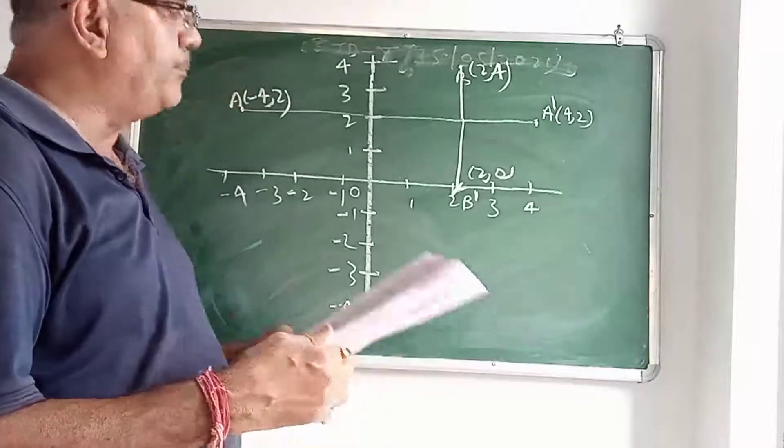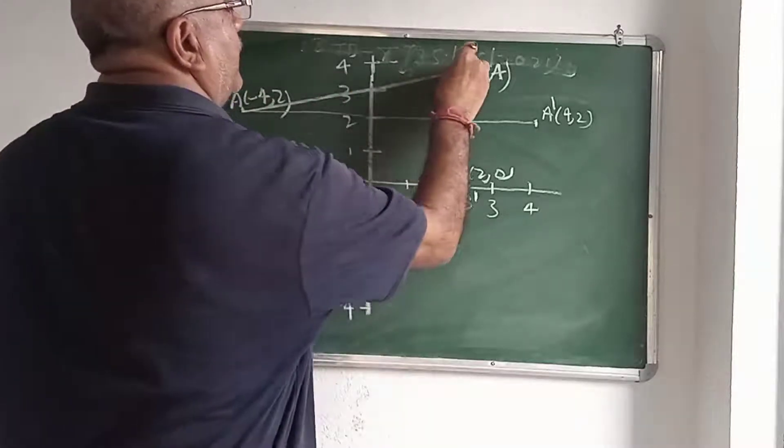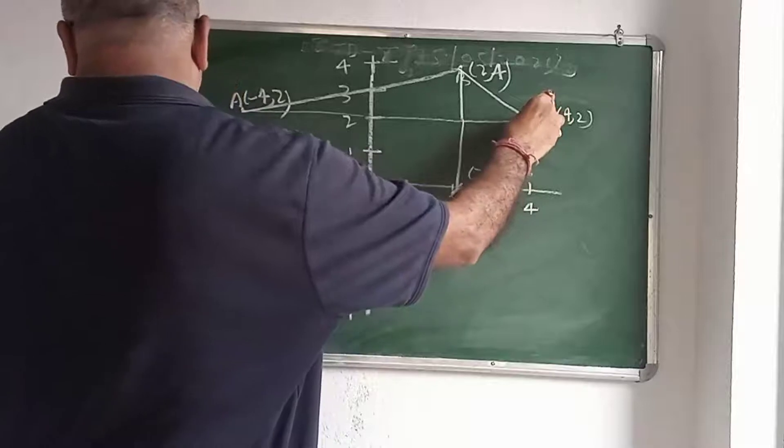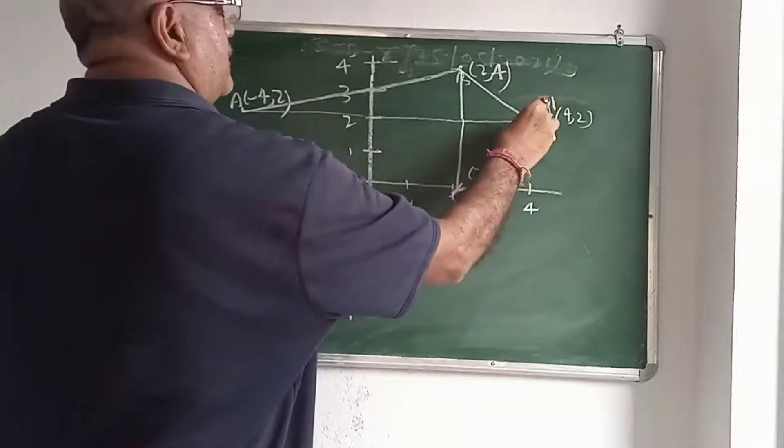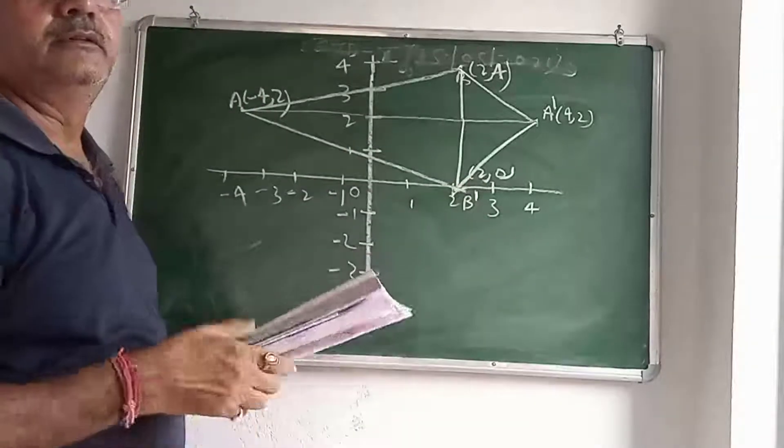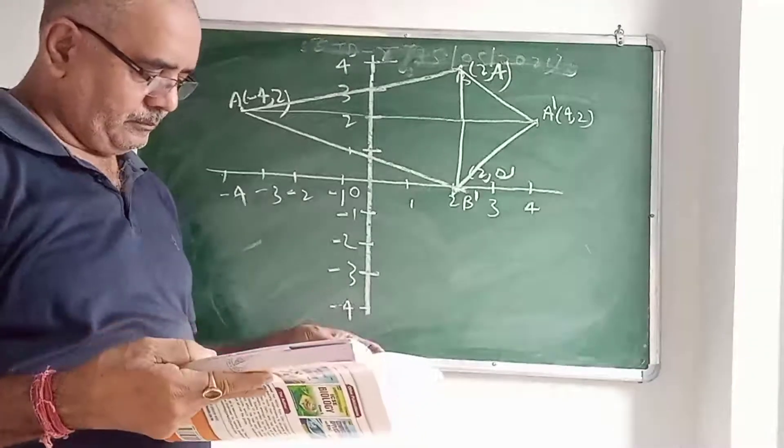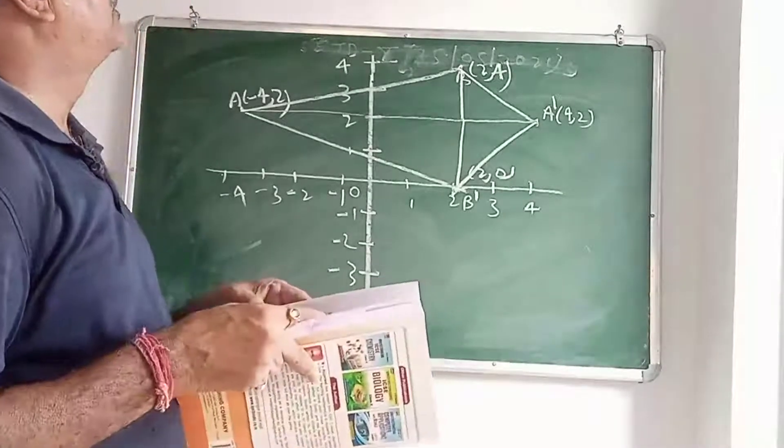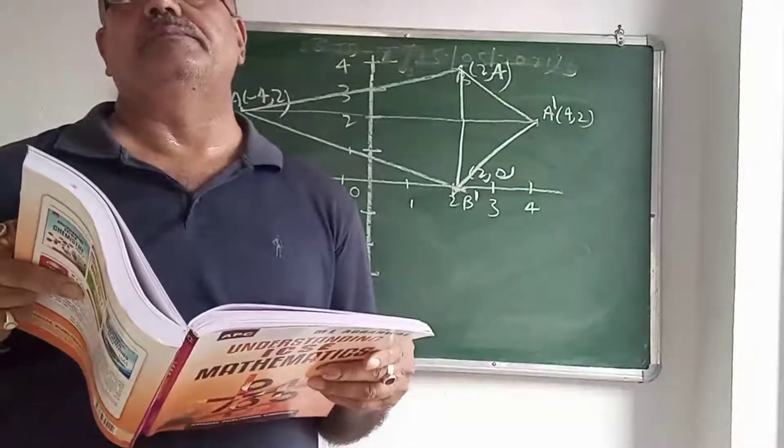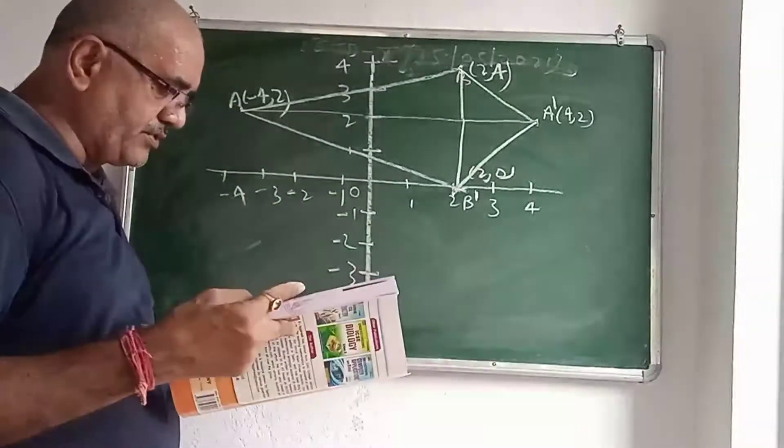Write down the coordinate of B dash. So what is the coordinate of B dash? Two, zero. Y-axis zero. This is invariant point. Now write the geometrical name of the figure A, B, A dash and B dash. What the figure name? Join this one.